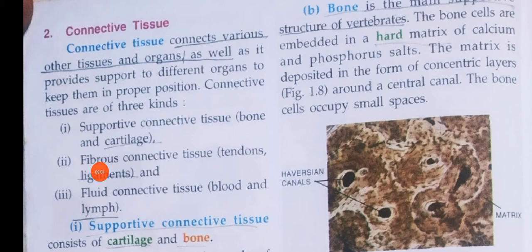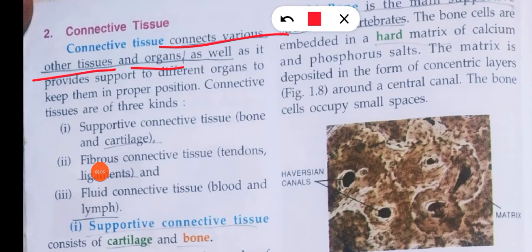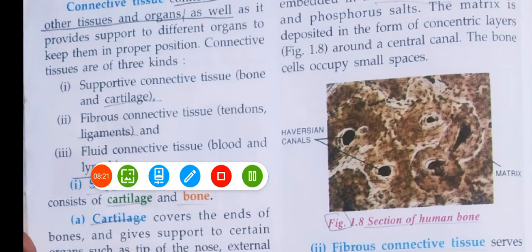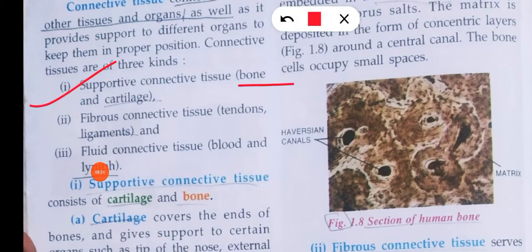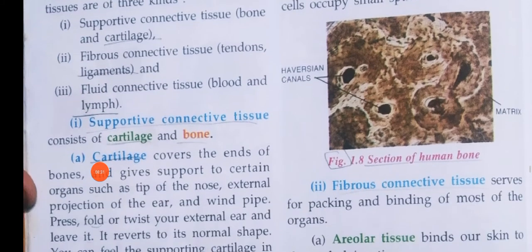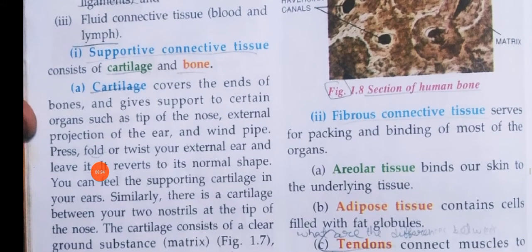Next is connective tissues. Connective tissues connect various other tissues and organs. They provide support to many organs. Connective tissues are of three kinds: supportive connective tissues (bone and cartilage), fibrous connective tissues (tendons and ligaments), and fluid connective tissues (blood and lymph).